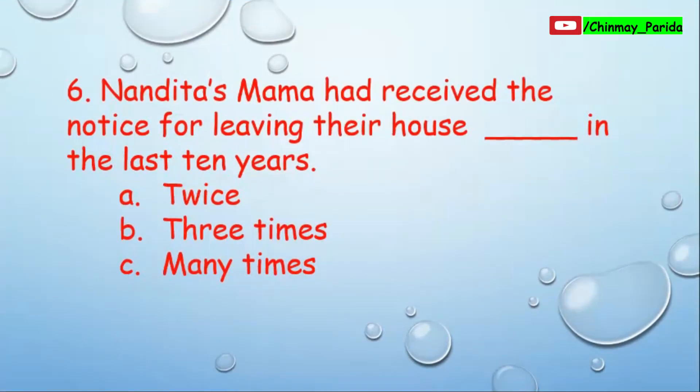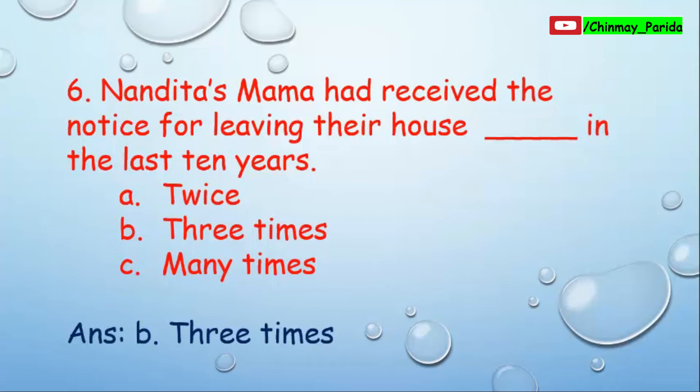Question number six: Nandita's mama had received the notice for leaving their house dash times in the last 10 years. Option A: twice. Option B: three times. Option C: many times. The answer is three times — Nandita's mama had received the notice for leaving their house three times in the last 10 years.